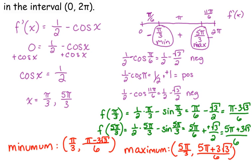The first derivative test says when your derivative changes from negative to positive, that means the original changes from decreasing to increasing. That's the visual I create in my mind — my function is decreasing and then it's increasing, so I know that's a minimum. And over here, it changes from increasing to decreasing, so I know that's a maximum. I don't memorize the whole first derivative test formally; I think of it visually — decreasing to increasing function means a minimum.